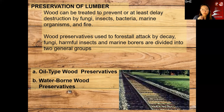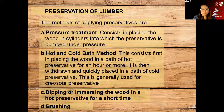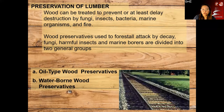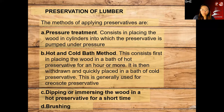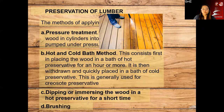For preservation, we have oil-type wood preservatives and water-borne wood preservatives. As the name suggests, oil-type uses oil applied to the wood, and water-borne uses water. There are different methods of applying these preservatives. Pressure treatment consists of placing the wood in cylinders into which the preservative is pumped under pressure.